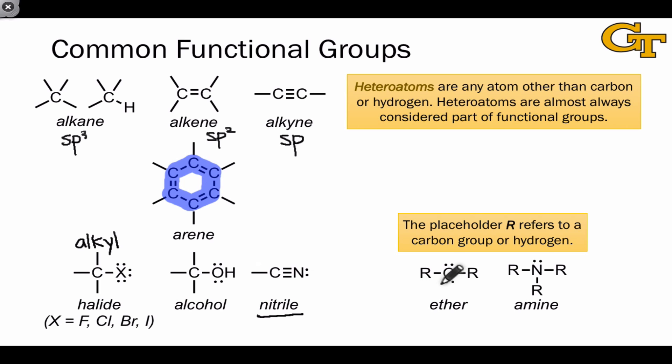An oxygen flanked by two carbon groups is known as an ether, and a nitrogen flanked by three carbon groups or hydrogens is known as an amine. And one point to make here is that the R's that you see in these structures refer generically to a carbon group or to hydrogen. You'll also hear me use the term heteroatom. A heteroatom is simply any atom other than hydrogen or carbon. And because they bring in interesting reactivity, we often think of heteroatoms as part of functional groups. In fact, there's a name for the functional group associated with essentially every heteroatom because of their unique properties.